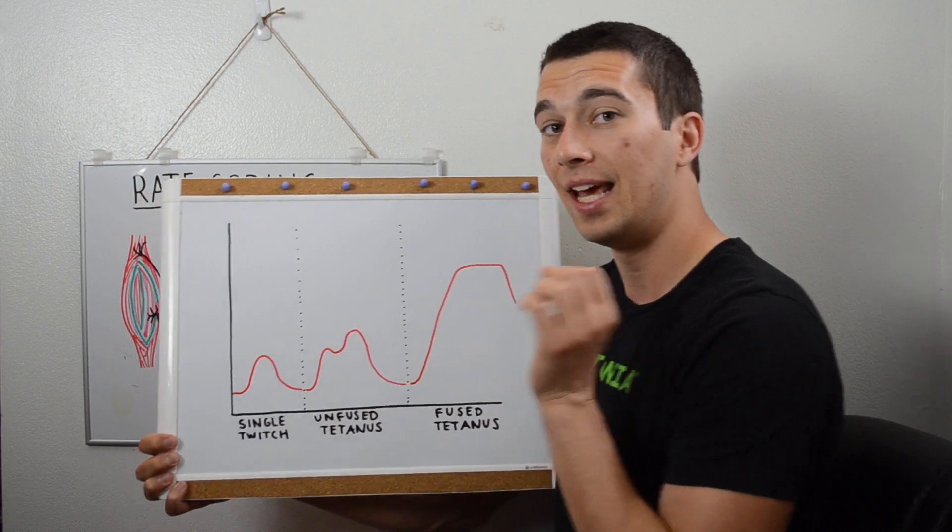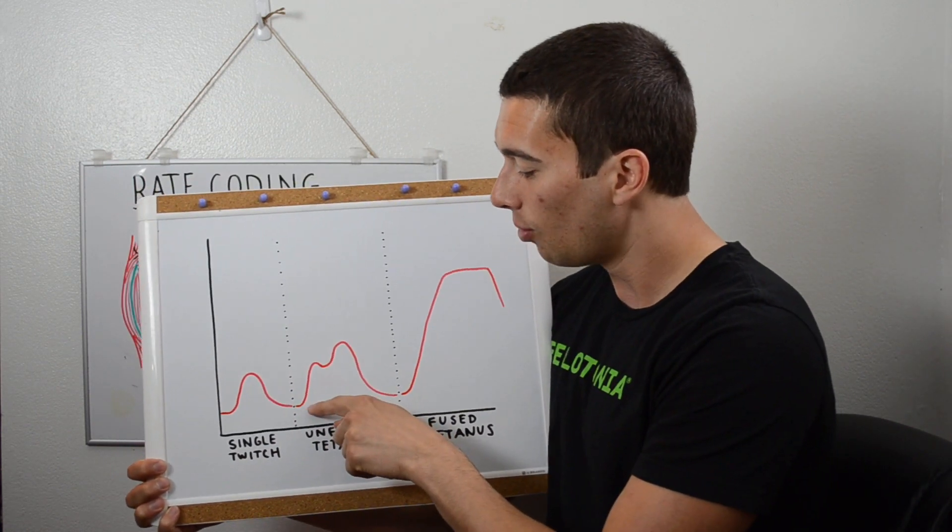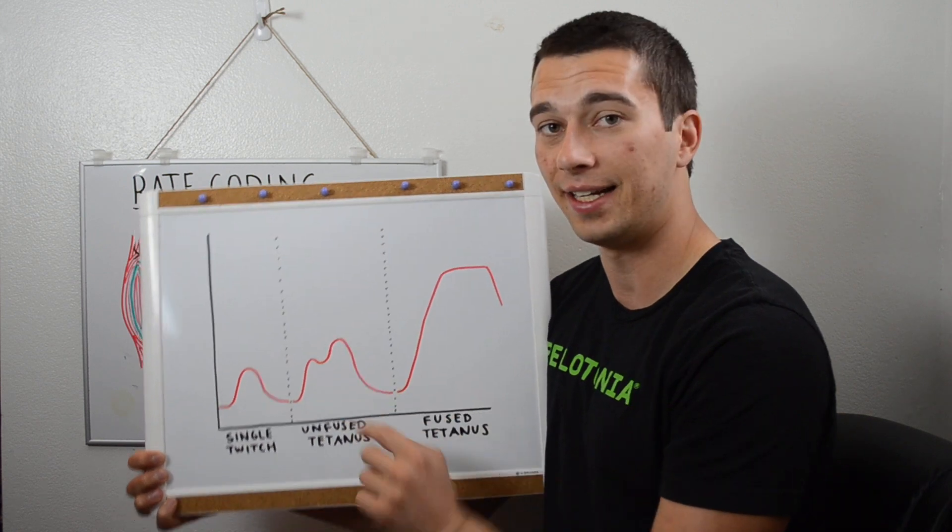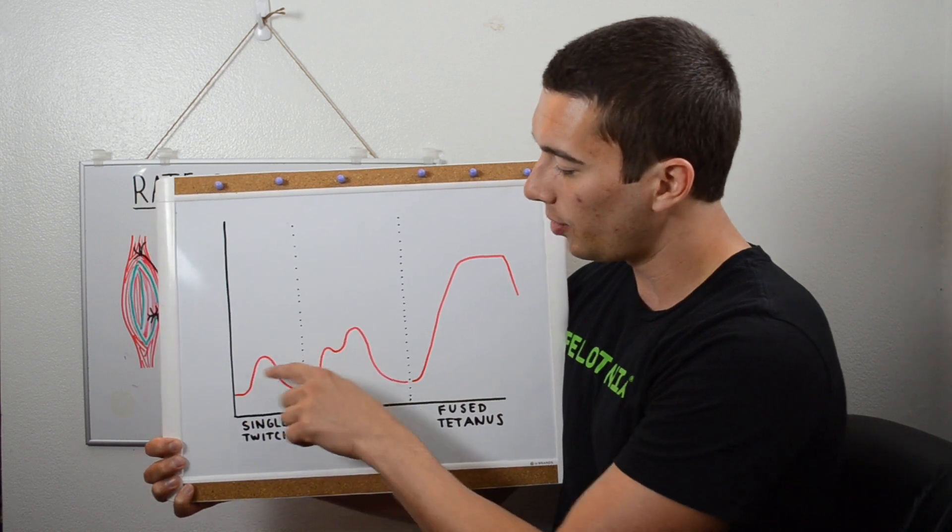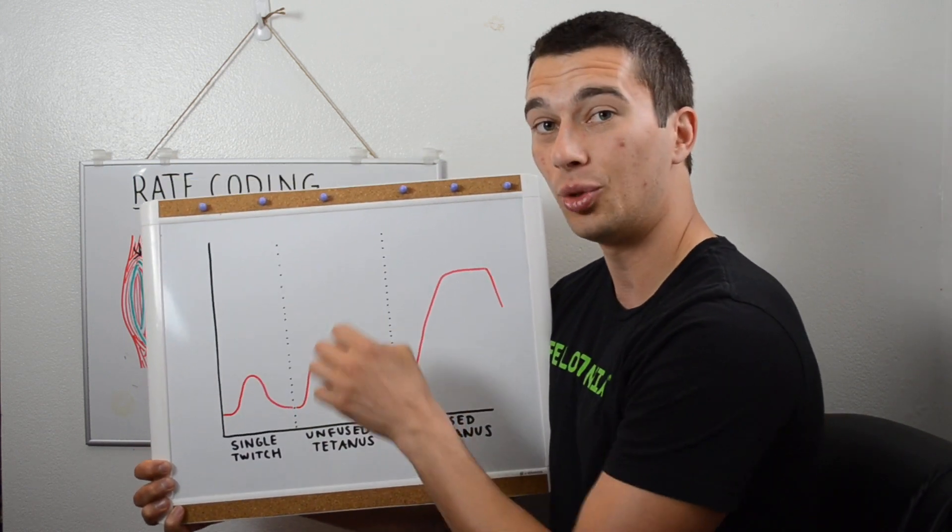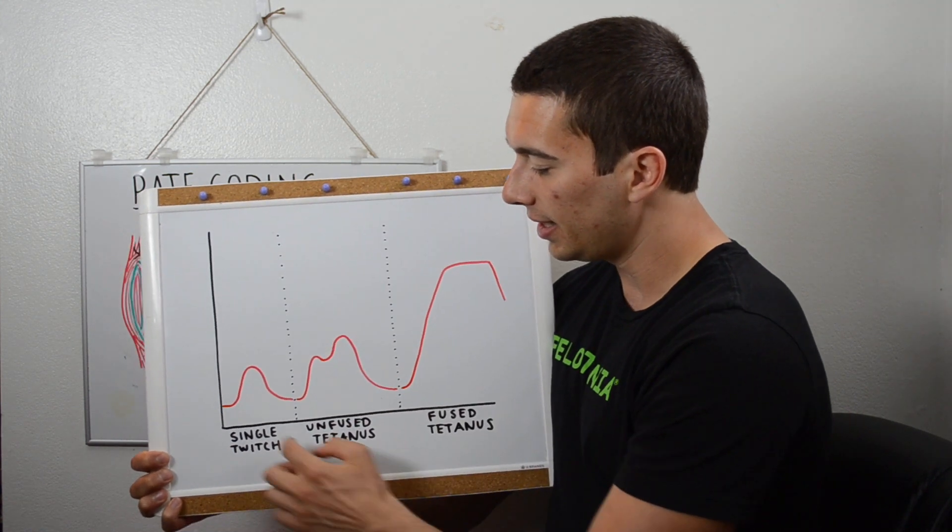If we send an action potential and then quickly send another action potential, what we'll get here is what we call unfused tetanus, where we send a signal and we get to a certain recruitment, but we can send another signal and get to even higher muscle recruitment. So again, this is dependent on the rate at which we send action potentials: rate coding.